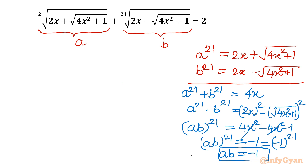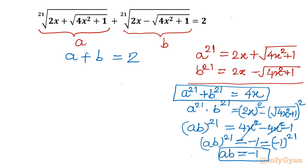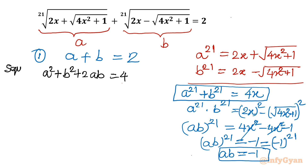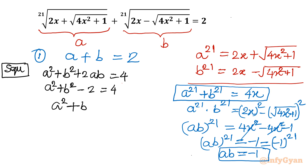Also very important: a²¹ + b²¹ = 4x. Now, from the original equation, a + b = 2. Taking the square of both sides: a² + b² + 2ab = 4. Substituting ab = -1 gives a² + b² - 2 = 4, so a² + b² = 6. This is equation number 2.